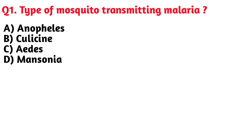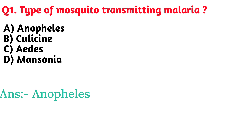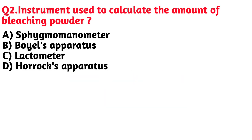Type of mosquito transmitting malaria. Option A. Anopheles is the correct answer.